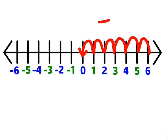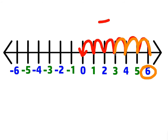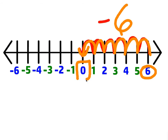If I start at 6, what number must I subtract? 3, 4, 5, 6 — if I move 6 to the left on the number line, that means I subtracted 6 to end up at 0. 6 minus 6 is 0.